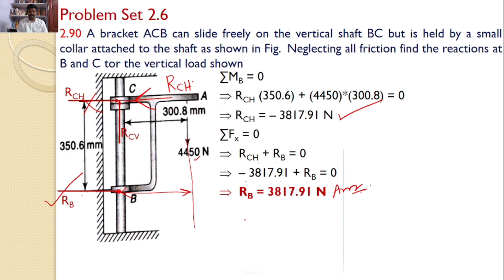Now, let us consider sigma Fy is equal to 0. There are two forces acting along y direction, that is RCV and 4450. Both are acting in the opposite direction. Hence, RCV is equal to 4450 Newtons.